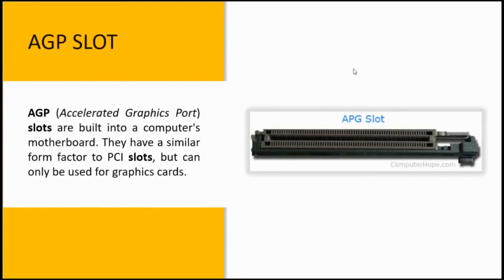The AGP slot stands for Accelerated Graphics Port slot. It was designed as a high-speed point-to-point channel for connecting a video card or graphics card to a computer system. Primarily it was used to assist in the acceleration of 3D computer graphics, and it was originally designed as a descendant of the PCI series of connections for video cards. It has since been replaced by PCIe slots.